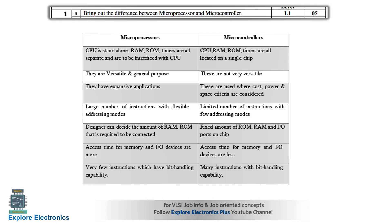The designer can decide the amount of RAM and ROM required to connect with the processor in a microprocessor. But the microcontroller has a fixed amount of RAM and ROM. Also, access time for the memory and I/O devices is more in a microprocessor, because the RAM and ROM are connected externally and communication time is higher. In a microcontroller, RAM and ROM are present inside the CPU itself, so access time for memory and I/O devices is less — microcontrollers are fast compared to microprocessors.